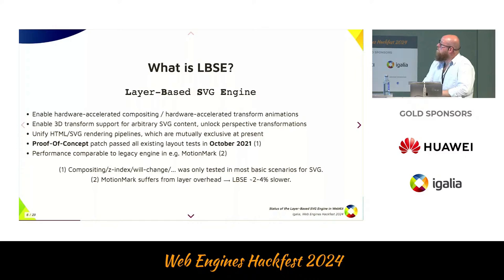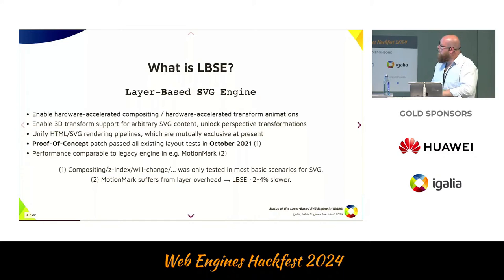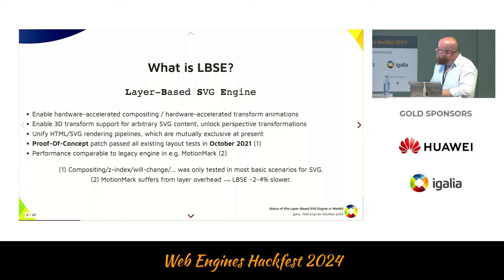In October 2021, the proof-of-concept patch for LBSE was basically ready for the first time. It gave us performance comparable to the legacy engine — some MotionMark subtests were slower, some were much faster. However, all the new things unlocked — compositing, z-index, will-change — were only tested in basic scenarios. Overall MotionMark was two to four percent slower. That might not seem worrisome, but per WebKit policy we never ship any performance regression. So that is completely unacceptable for end users.